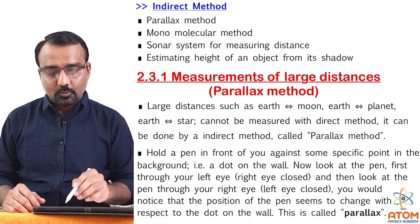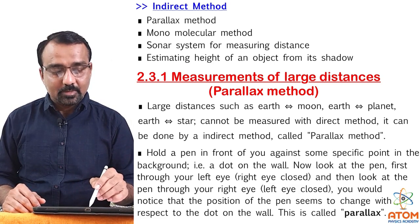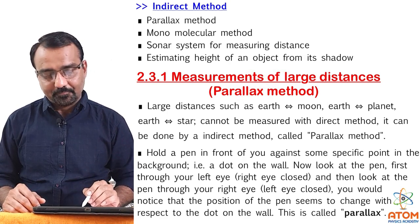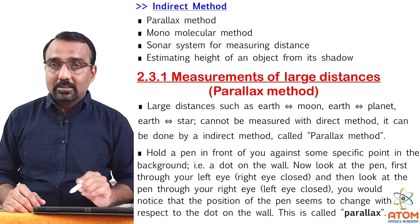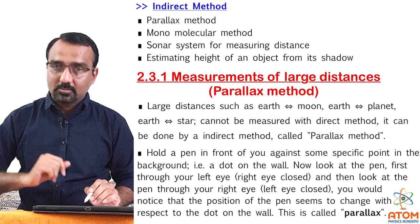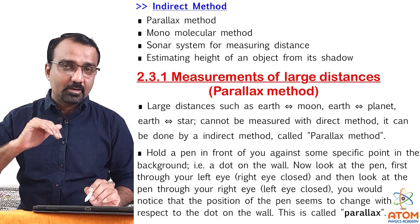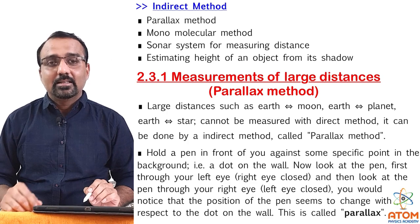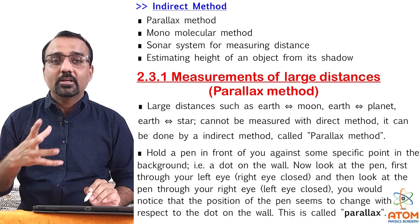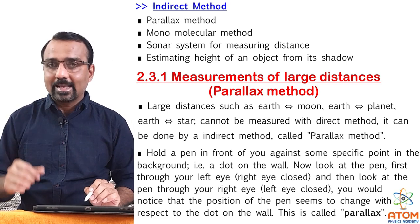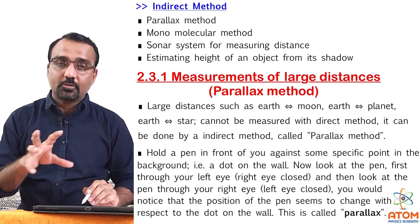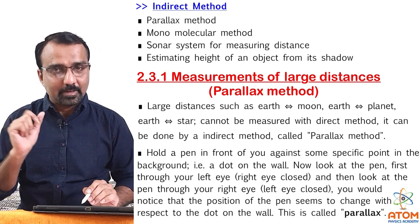Now let us see topic 2.3.1, that is measurement of large distances, basically by the parallax method. Large distances such as the distance between Earth and Moon, distance between Earth and a planet, distance between Earth and a star, and so on — these cannot be measured by a meter scale or something like that. So we need to use some indirect method. One of those indirect methods is the parallax method. First of all, let us understand what parallax is.